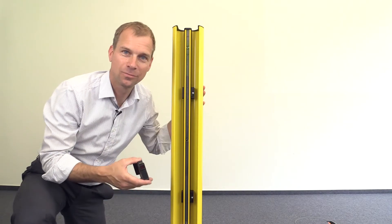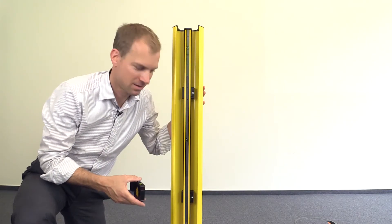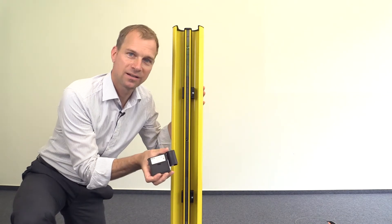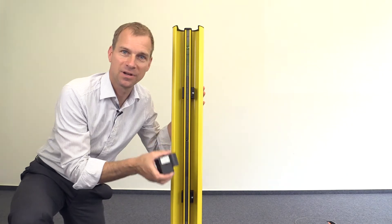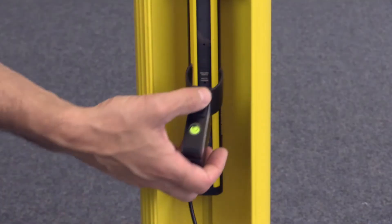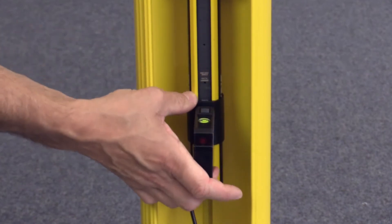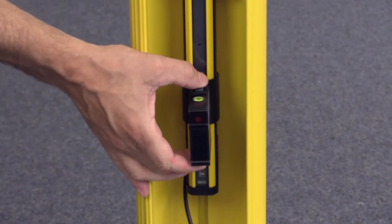The system has to be aligned beam by beam, starting with the bottom beam. We use the AR60 as a laser alignment aid. Place the AR60 on the first beam and turn it on.